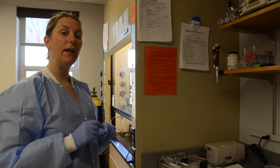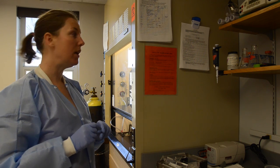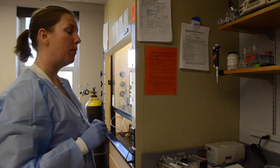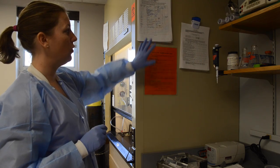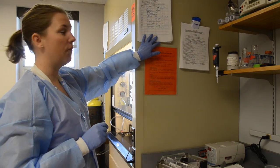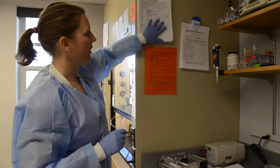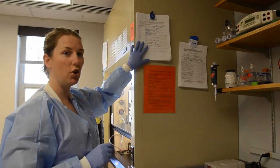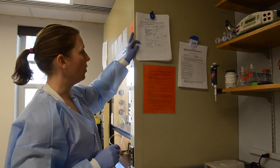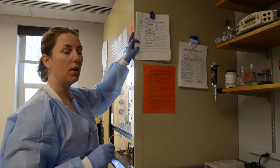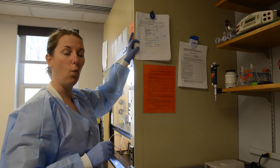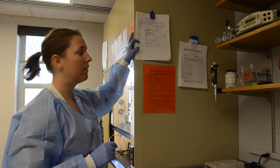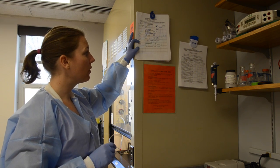Today we're going to talk about hood and chemical safety. One of the most important things is to start with the forms. On the side of the hood here we have a hazardous waste log sheet. This is where you mark when you are adding waste to our satellite accumulation area.